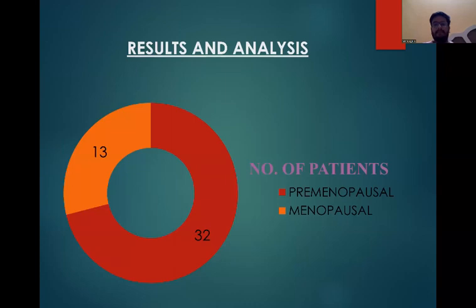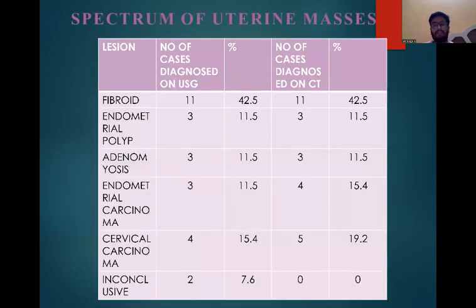Results and analysis. Of the patients, 13 were premenopausal and 32 were postmenopausal. Spectrum of uterine masses: uterine fibroids — 11 cases detected on USG and 11 on CT. Endometrial polyp — 3 cases on sonography and 3 on CT. Adenomyosis — 3 patients on both. Endometrial carcinoma — 3 detected on USG whereas 4 on CT. Cervical carcinoma — 4 on USG and 5 on CT. Inconclusive results: 2 on USG and none on CT.